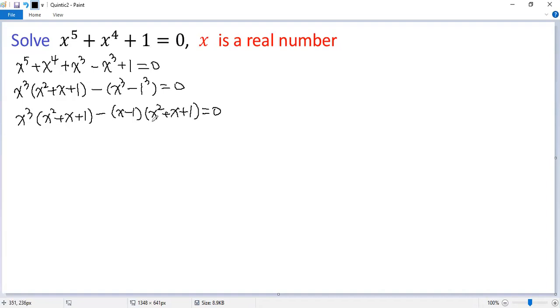Now we take the common factor out, so x squared plus x plus 1 times x cubed minus x plus 1 equals 0.